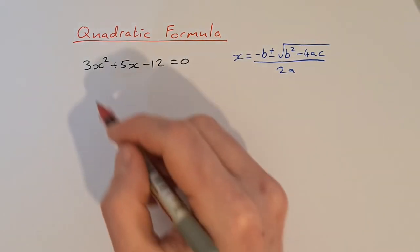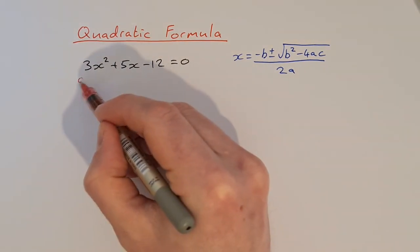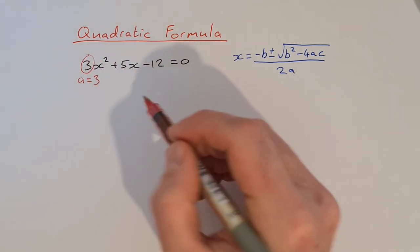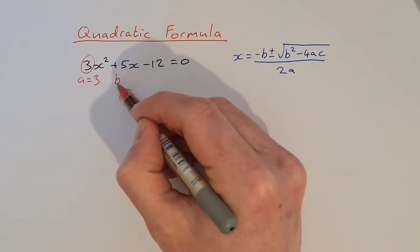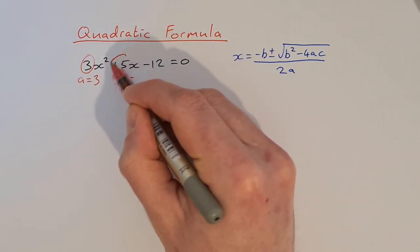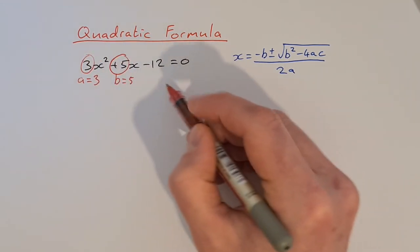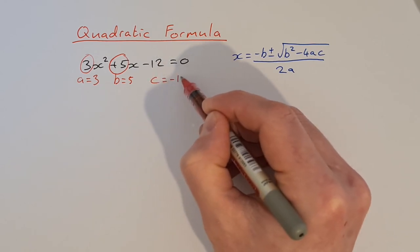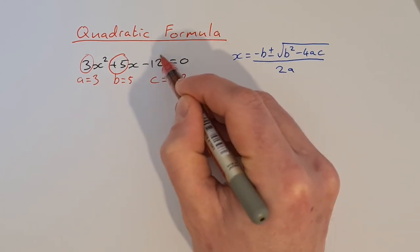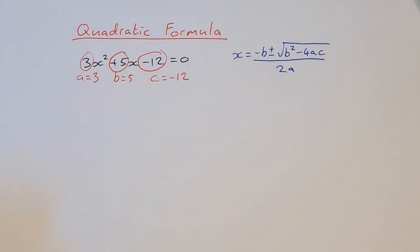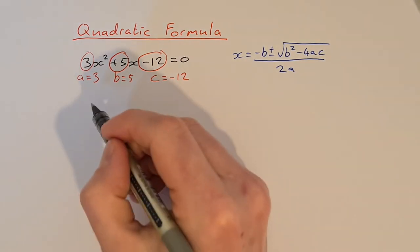In this equation, a is equal to 3 — that's the coefficient of x squared. B is equal to 5 — that's the coefficient of x. And c is equal to minus 12 — that's the constant. So we're going to fill all of these into the formula and see what we get.